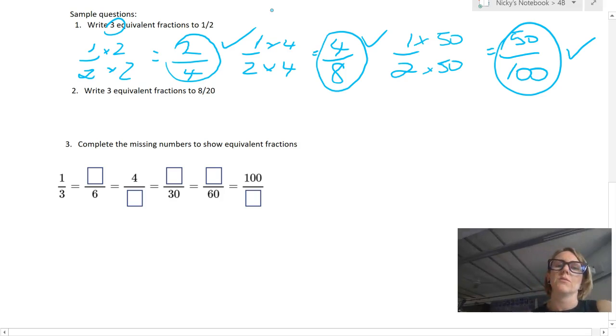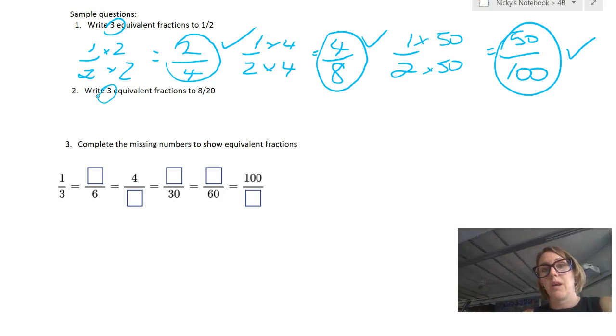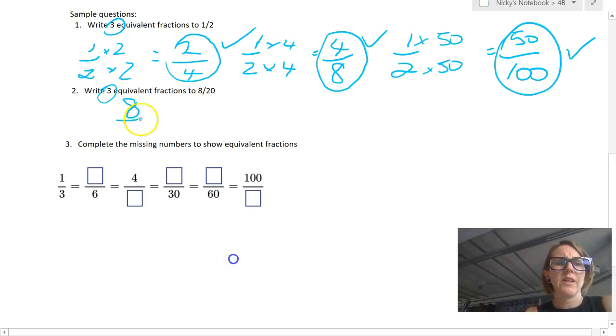Okay. Now, the next one that I've got here is a similar question. Write three equivalent fractions to eight over 20. I could, again, multiply eight over 20 by a set of numbers like I did just previously. But for this example, I can divide them as well. So I thought I'd do a couple of examples like that.